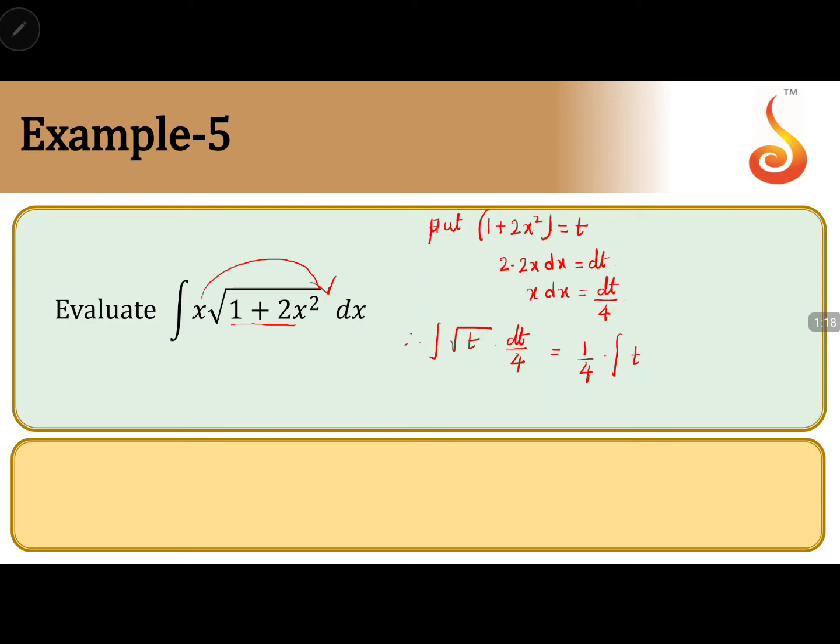Root t can be written as t to the power 1 by 2 into dt. That is equal to 1 by 4 into t to the power 1 by 2 is t to the power 3 by 2 by 3 by 2 plus c.